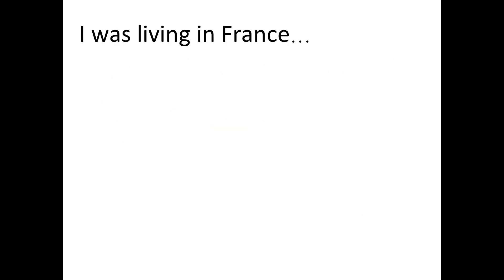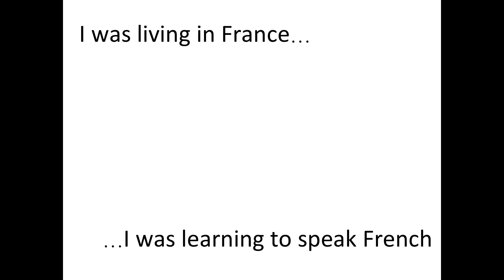To illustrate: if I have the sentence 'I was living in France' and then a paragraph follows, and later I want to say 'I was learning to speak French' — French is related to France — a machine using a recurrent neural network may not be able to intuit 'French' because 'France' was too far back, and the vanishing gradient problem means it wasn't able to use that context.